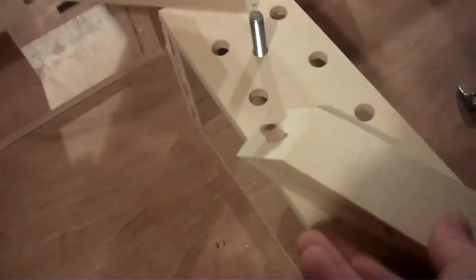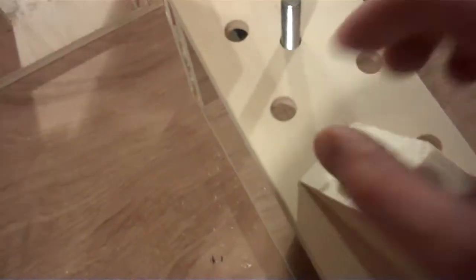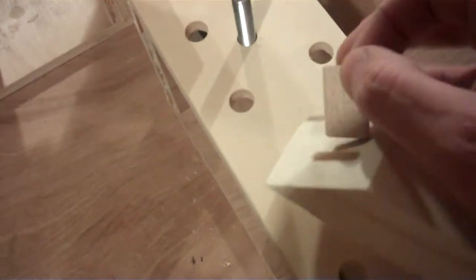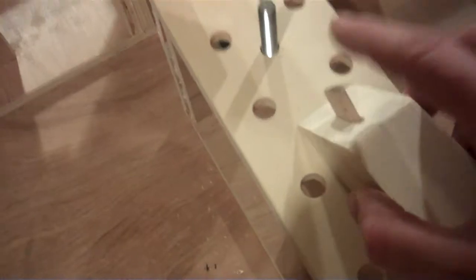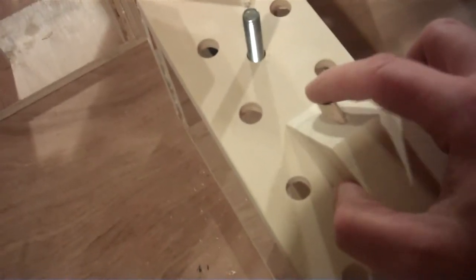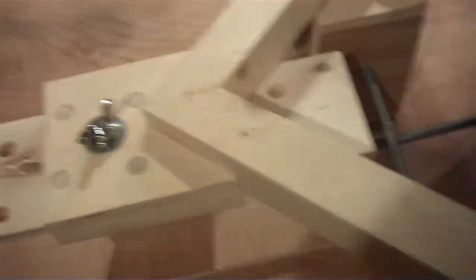Basically what the Festool domino does is it cuts this really nice groove, and you get these pieces that fit in. You can cut it so it allows for a little bit of wiggle, and when the wood glue under pressure dries, it'll be solid as a rock. But the nice thing is that it gives you enough play that you can line up all your corners.